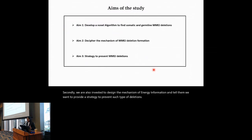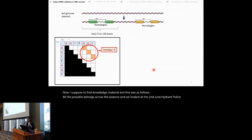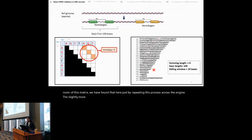Now, our approach to find novel somatic and germline deletions was as follows. We decided to locate all the possible homologies across the exome, and in order to do so, we looked at the reference genome 100 bases at a time, and developed a matrix of size 100 by 100. Now, whenever there is a match along the diagonal of this matrix, we have found a homology. Thus, by repeating this process across the exome, 100 bases at a time, with a sliding window of 20 bases, we developed the first map of homologies.